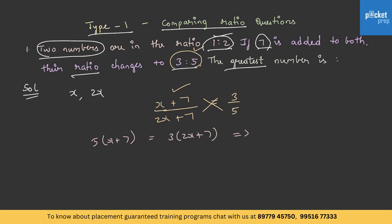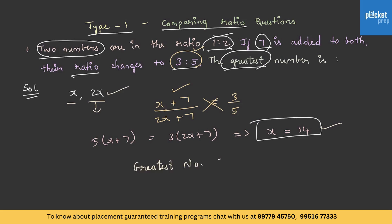5 into (X plus 7) is equal to 3 into (2X plus 7). On solving this, we get X is equal to 14. But the question asks for the greatest number. Out of the two numbers, 2X is the greater number. Substituting X equals 14, we get the greatest number as 28. This is the answer.